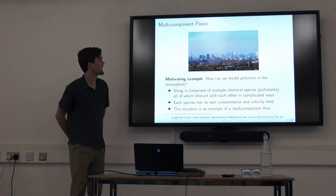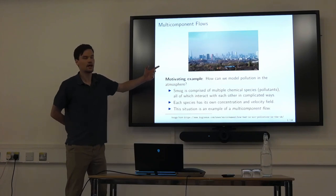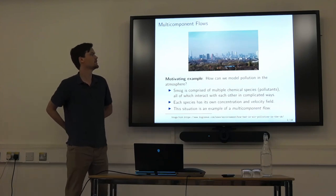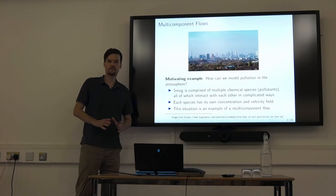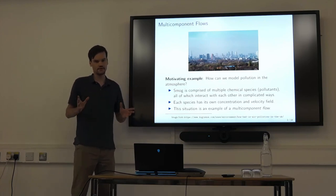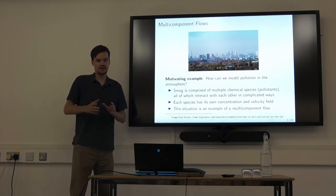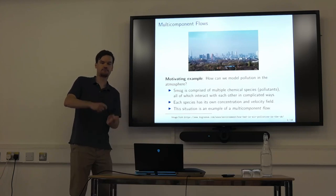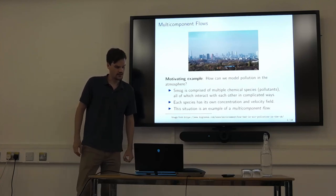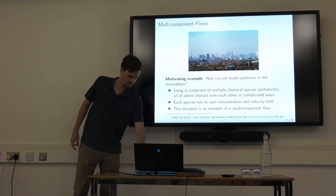To motivate what I'm looking at, these are multi-component flows. Here we have in this picture some pollution or smog in the air over London, and the question is how could we model this pollution in the atmosphere? The idea is that the smog is comprised of multiple chemical species or pollutants, and they're all interacting with each other in complicated ways. They all have their own concentration fields and velocity fields that are varying in space and time. This situation would be an example of multi-component flow because there's multiple chemical species we want to model their concentration and velocity fields individually.